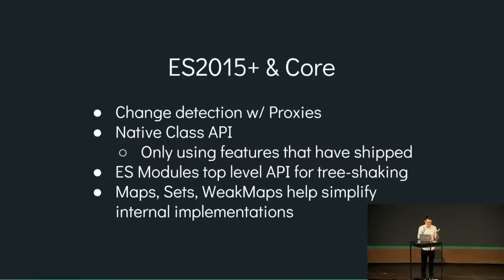Maps, Sets, and WeakMaps are really helpful data structures that can greatly simplify Vue's internal implementations, where we previously had to resort to custom polyfills, hacks, or less efficient ways to track things. Overall, ES2015 has allowed us to implement a Vue core that is leaner, faster, and a significant quality-of-life improvement for maintainers.